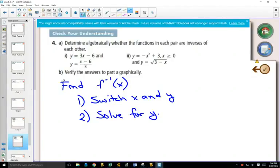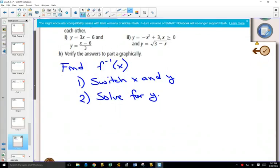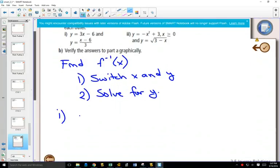So in part a, to find out if y equals (x minus 6) divided by 3 is the inverse of y equals 3x minus 6, if you start with y equals 3x minus 6, switch the x and the y, and rewrite it as x equals 3y minus 6.